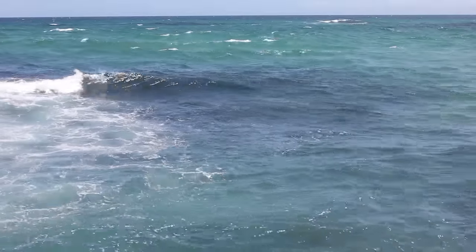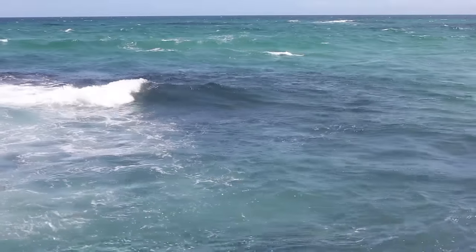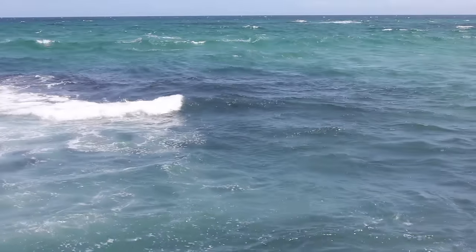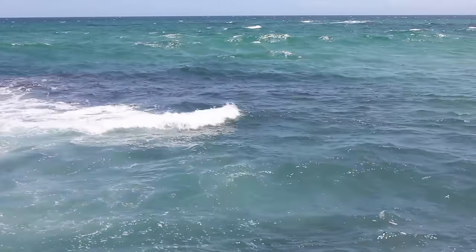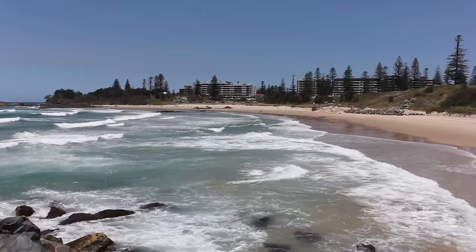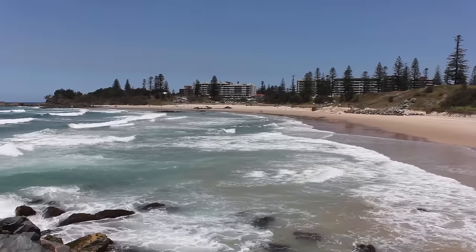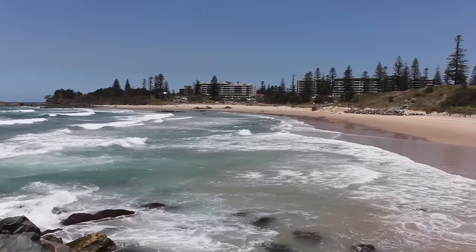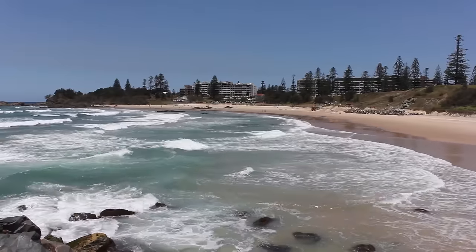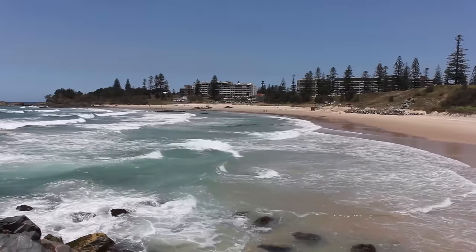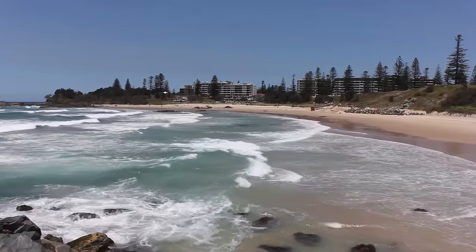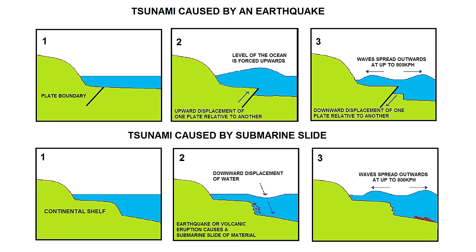Normal ocean waves result from the frictional drag of wind on the surface of the water. The waves you observe at a given beach may originate thousands of kilometers away, whereas tsunami waves are caused by displacement of the crust caused by an earthquake.